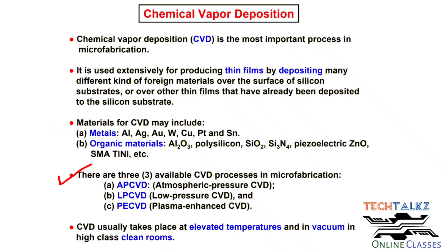Three types are basically in the CVD process. Atmospheric pressure CVD is called AP-CVD. The next one is low pressure CVD process. The third one is PE-CVD, i.e. Plasma Enhanced CVD process. In the first two processes, AP-CVD and LPCVD, high temperature operation is required for chemical reaction or decomposition.